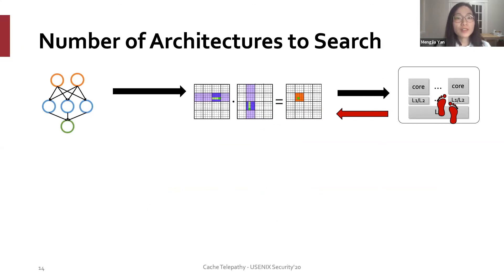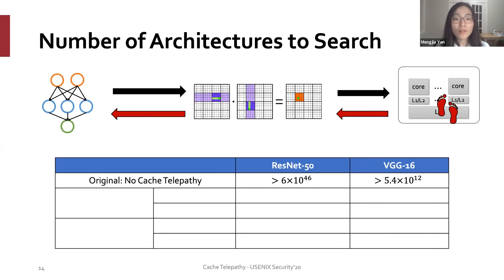Let's briefly go through the evaluation results. We use cache-based side channel attacks to extract matrix parameters. Next, we can use the matrix parameters to reconstruct DNN architectures. We evaluate cache telepathy on ResNet-50 and VGG-16.